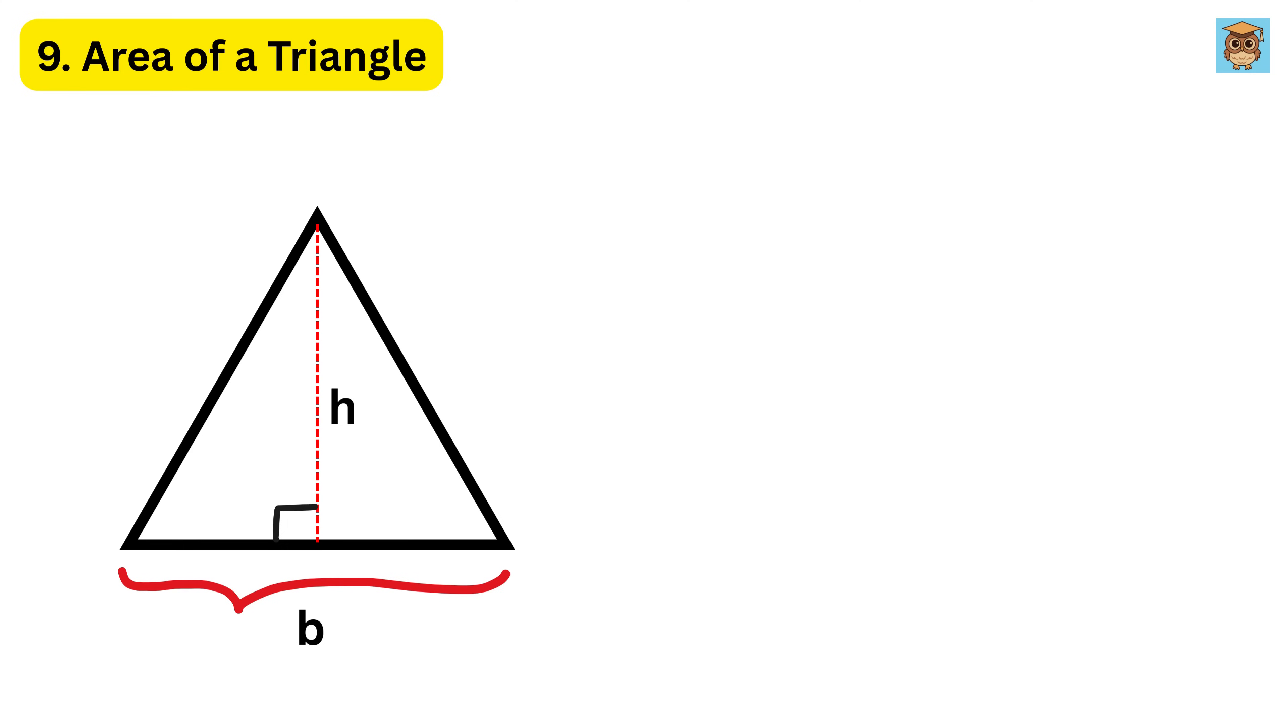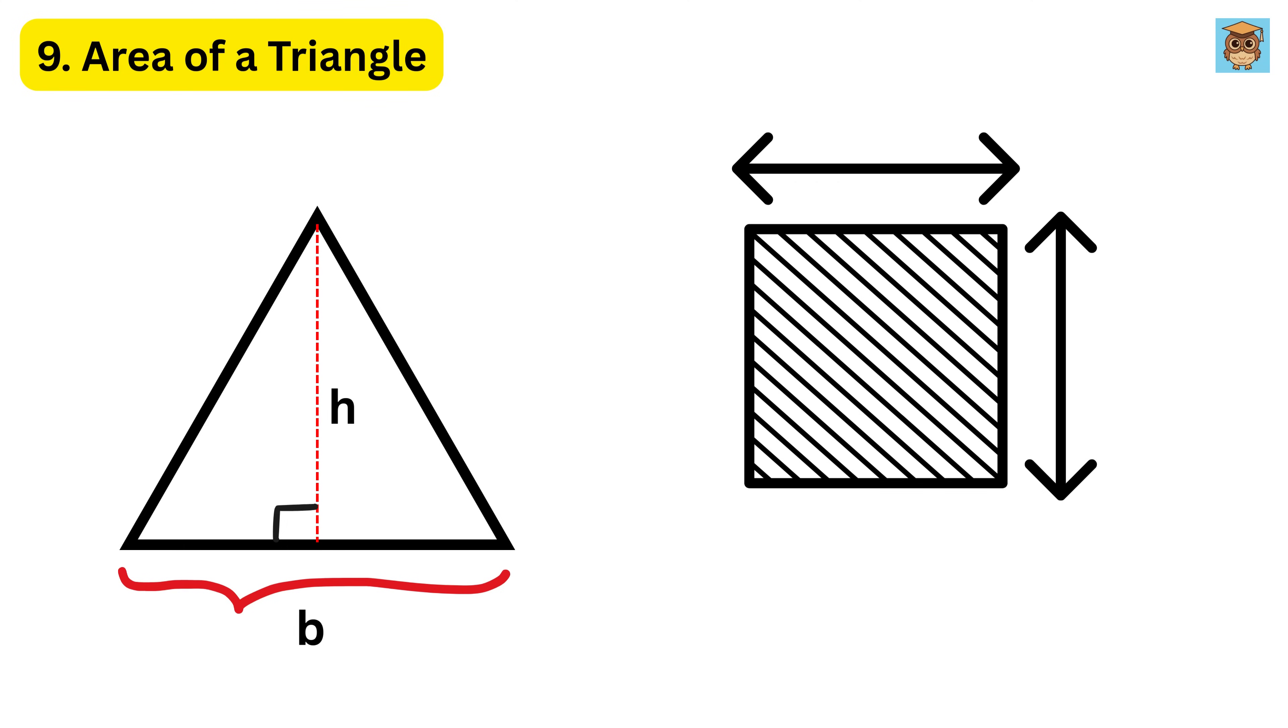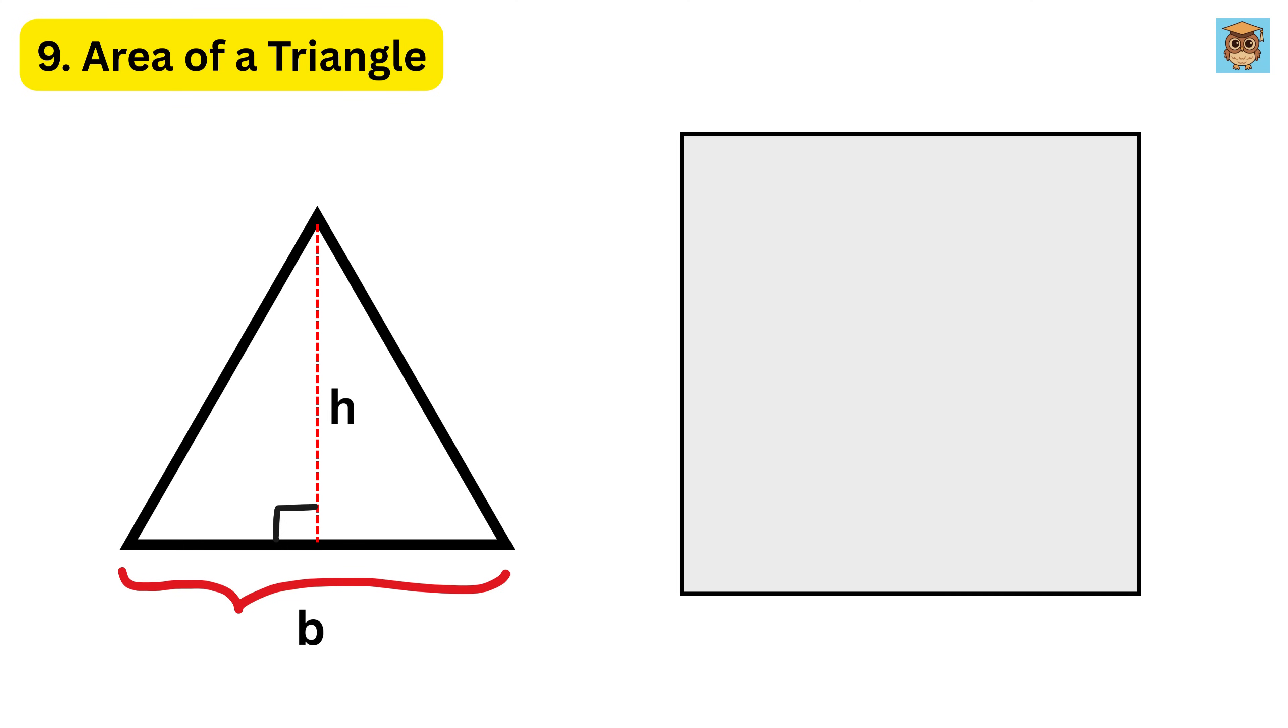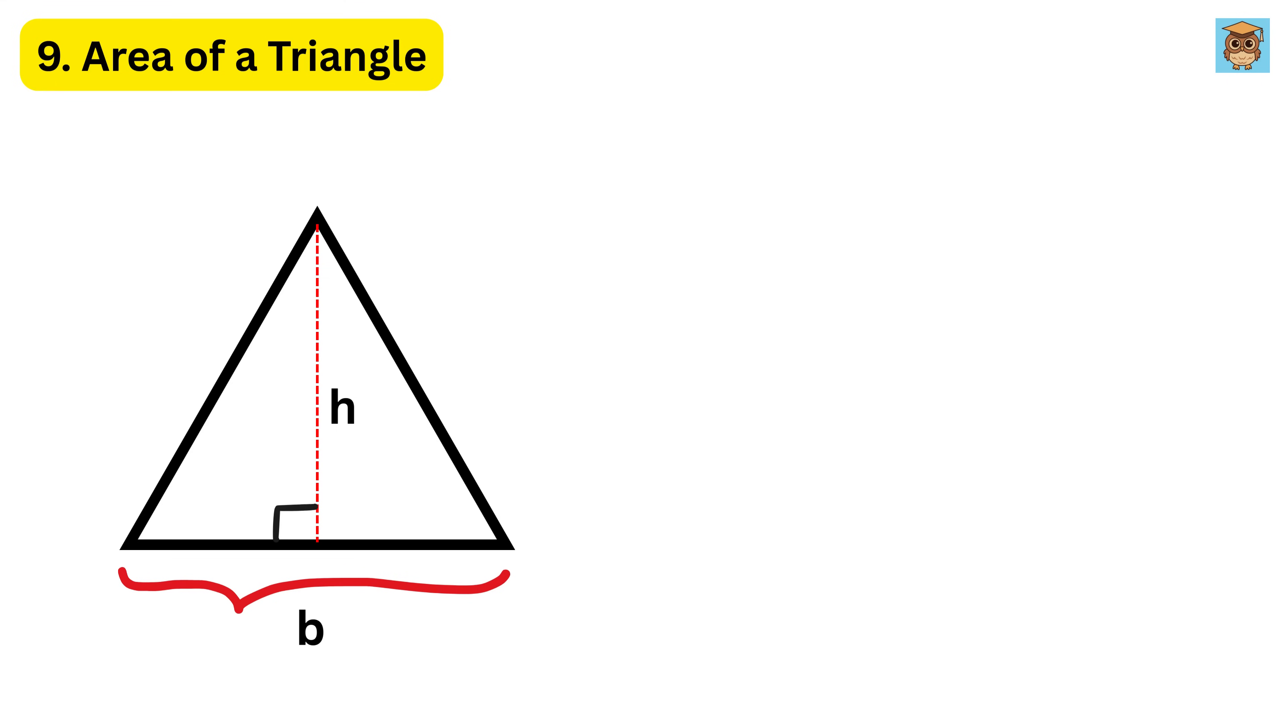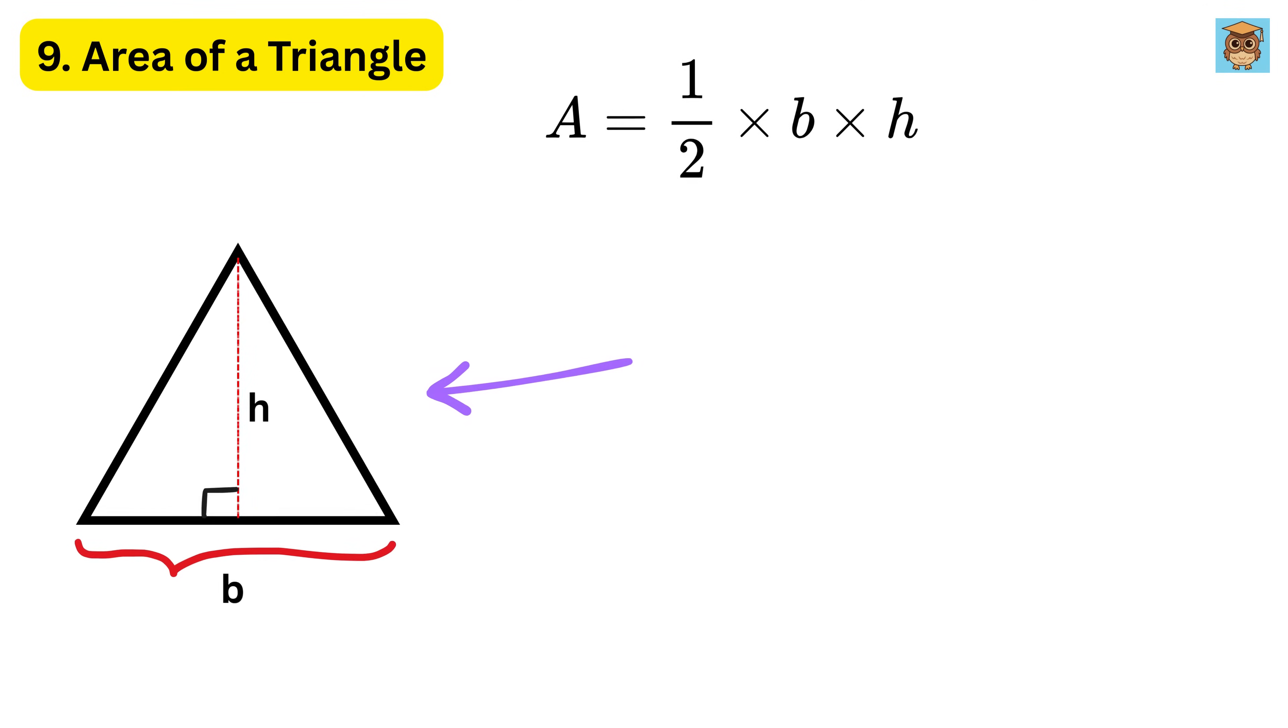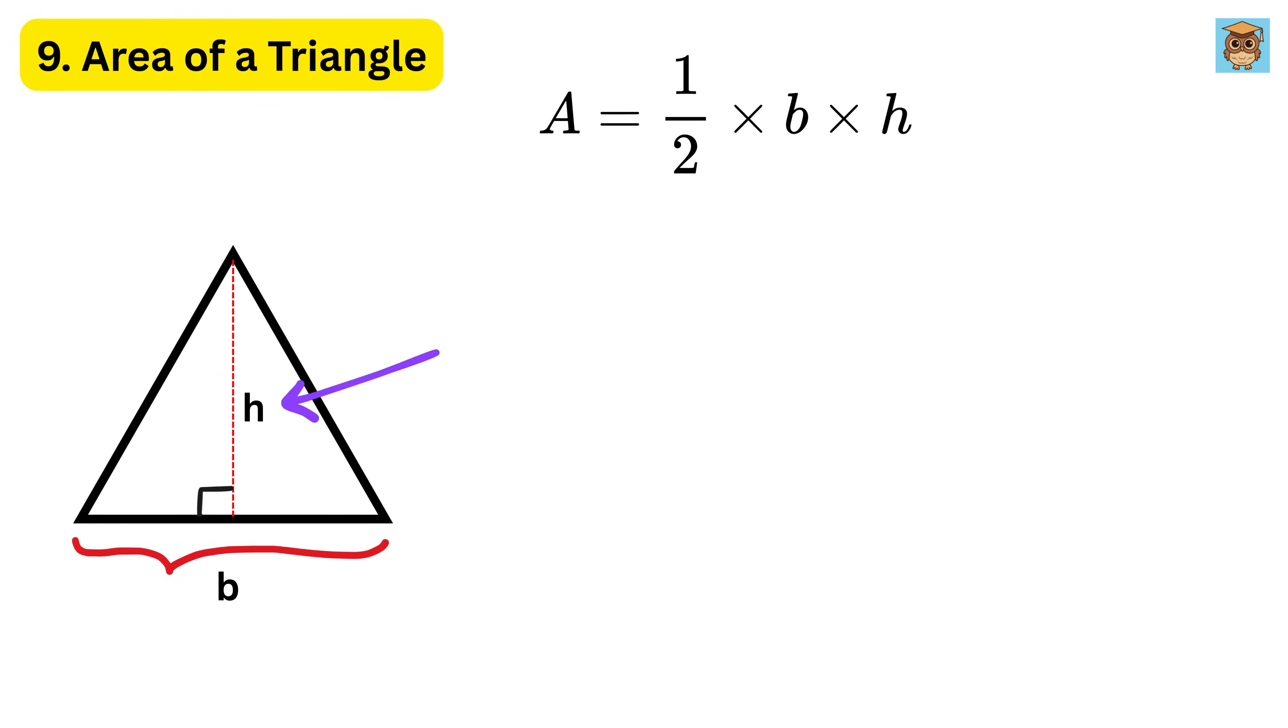9. Area of a Triangle. Area is the amount of space inside a shape or surface. Imagine a square floor, and you want to cover it with small square tiles. If each tile takes up one unit of space, then the total number of tiles needed to cover the floor is the area of the square. The area of a triangle is found by multiplying half of the base with the height, so consider this acute angled triangle. If this side is the base, and then this is the height and area will be this.